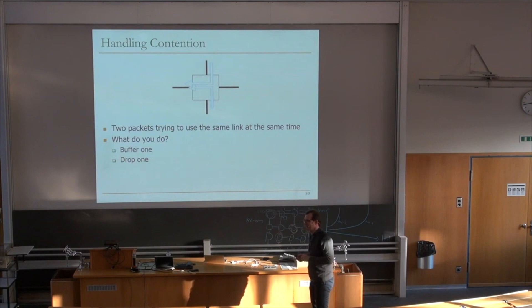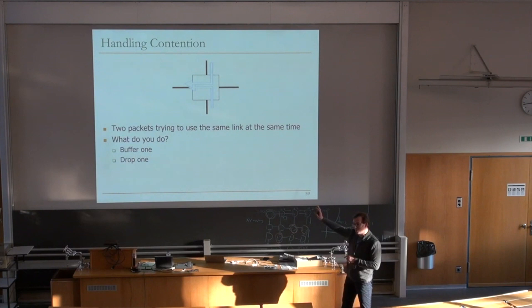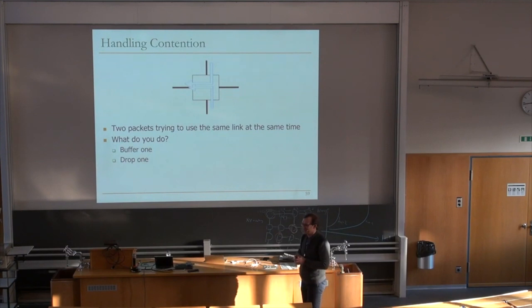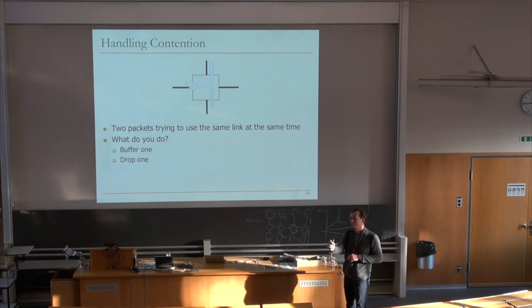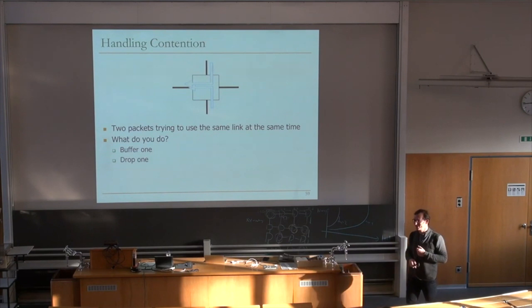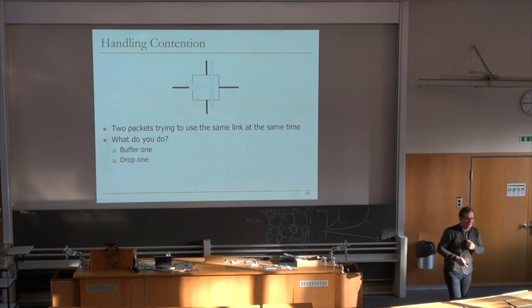You could drop but implement reliable transport on top — have acknowledgments from the destination, similar to TCP with numbered acknowledgments. That's one way of handling the dropping. The destination can figure out packets were dropped. But there are multiple ways of handling it, and dropping has a lot of complexity. Buffering is a lot easier, perhaps, but it's a choice.